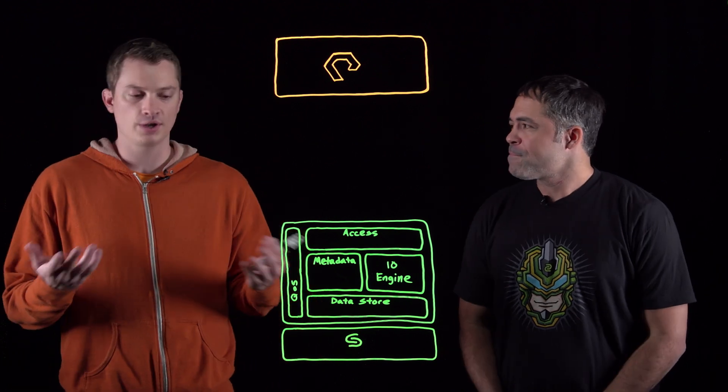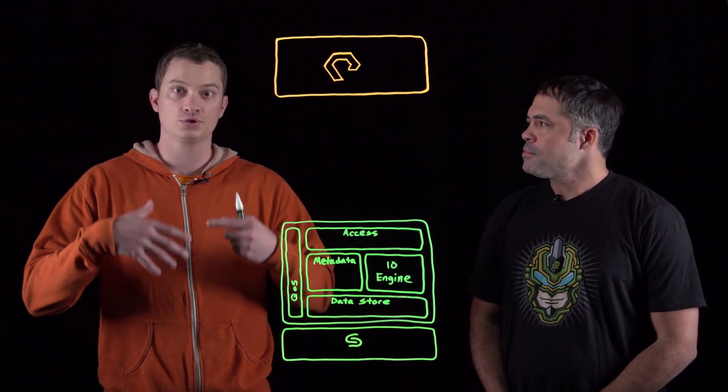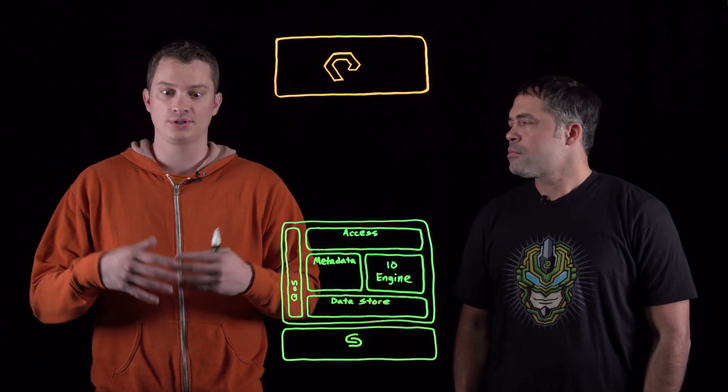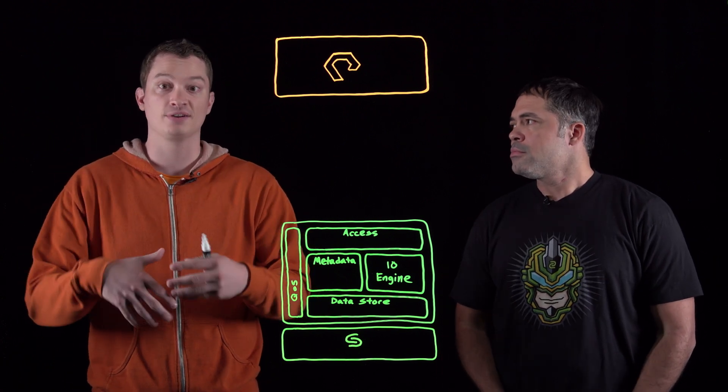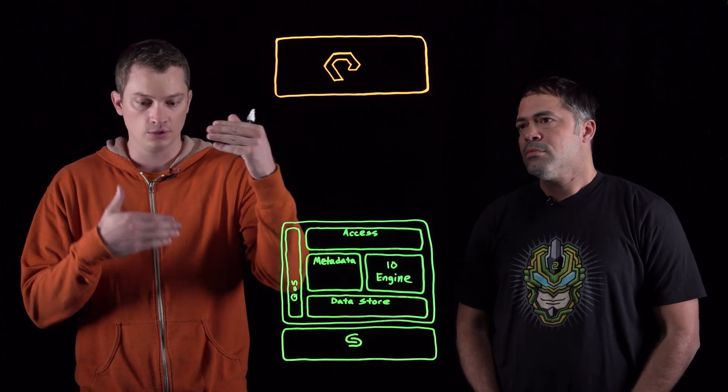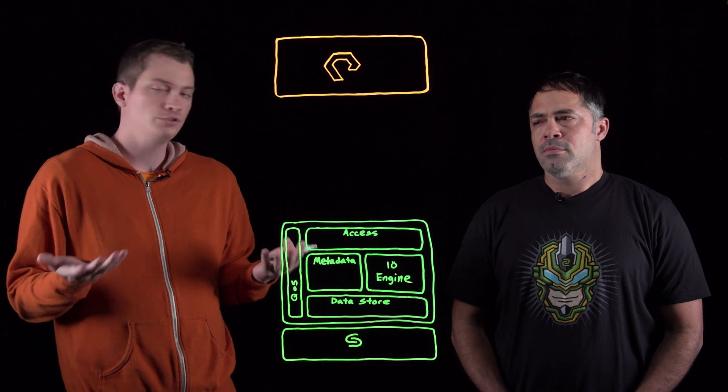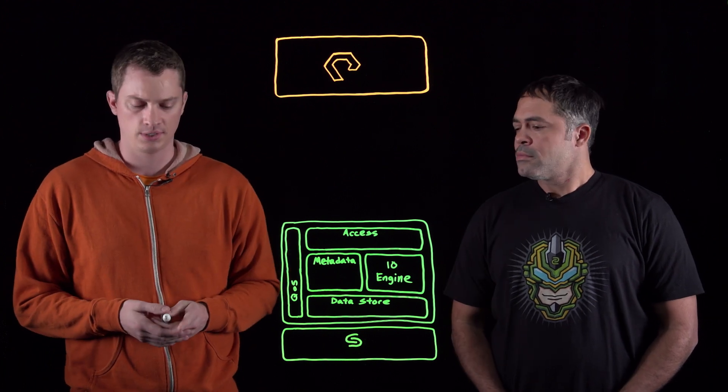What this integration is all about is taking your snapshots on the array, your point in times from your data, and making sure that they are set to an enterprise class backup scheme, which is having multiple targets. Not having your data backup on the same place as your primary. And so let's go into a little bit how this is done between Cohesity and Pure.